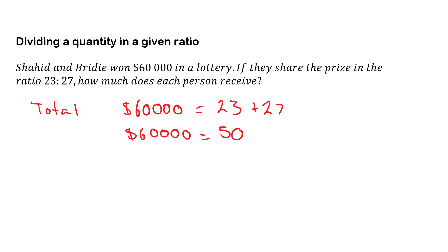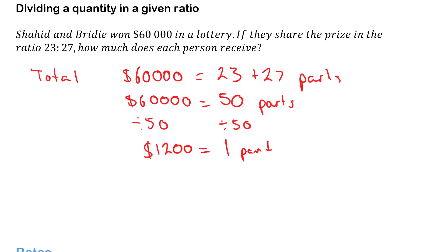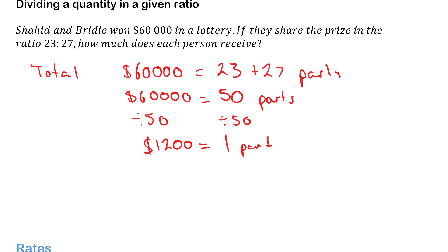So again we're using the unitary method. I'm going to divide everything by 50, which gets me $1,200 equals 1 part. So let's put parts up here just to make this a little clearer. So now that I know that $1,200 is worth 1 part, I can find what Shahid gets.